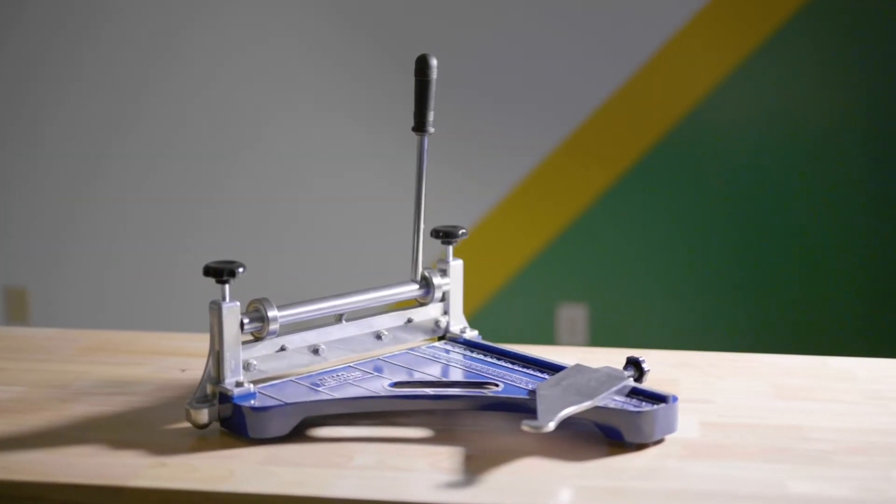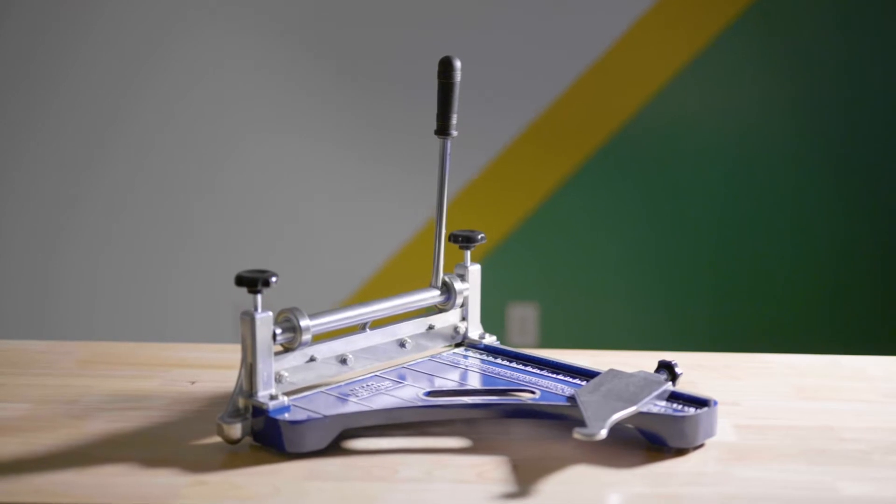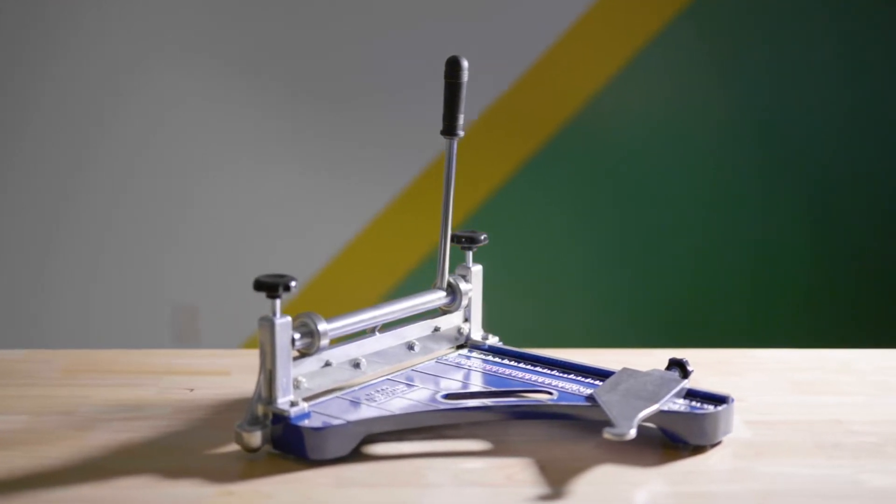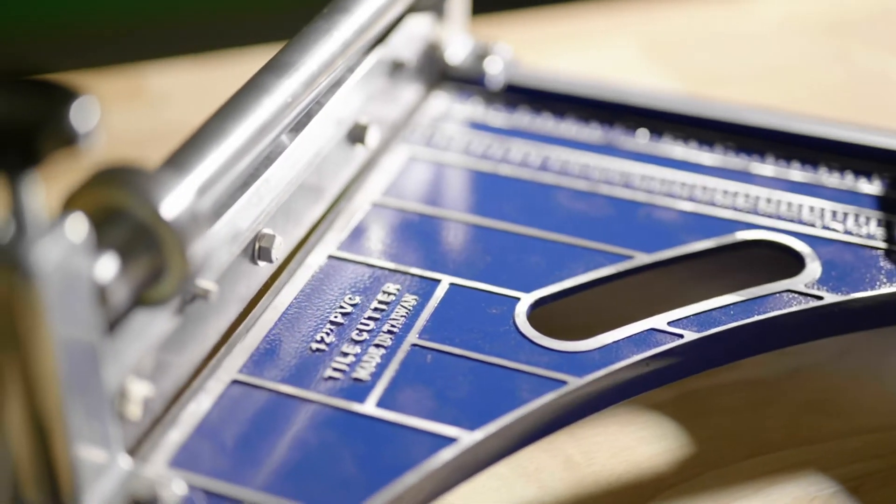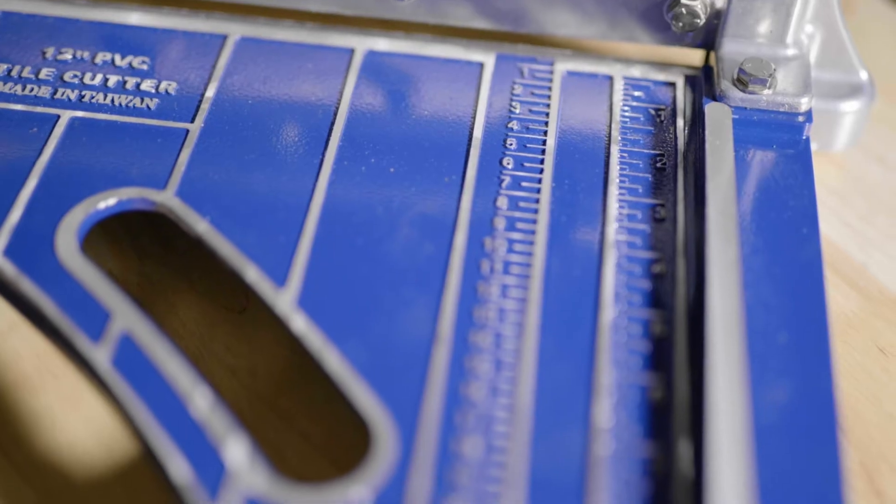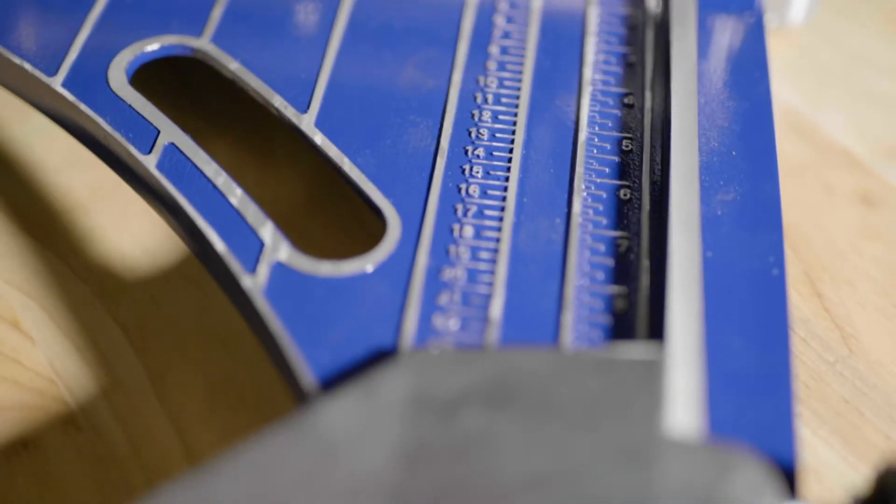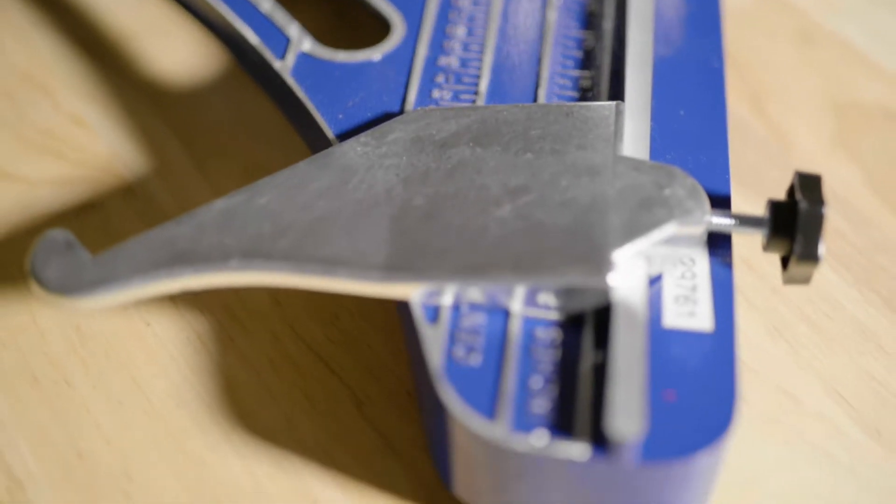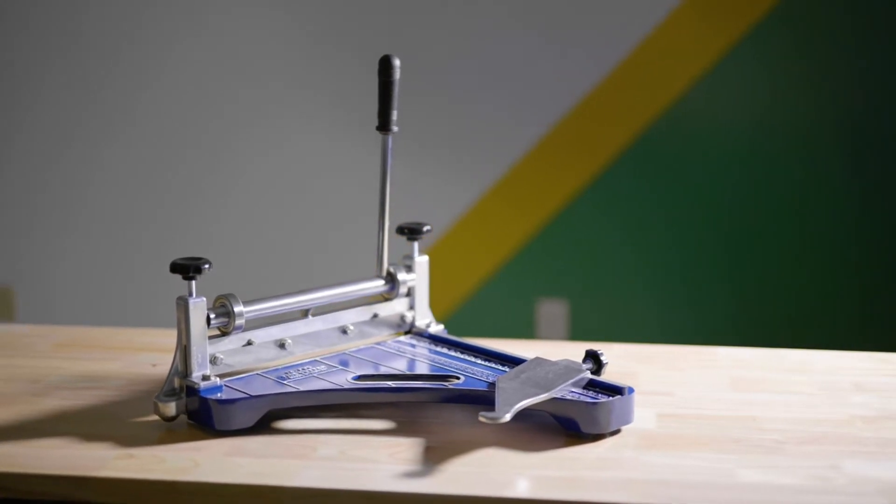In this video, we're going to go over the basic operational functions of our PVC Tile Cutter. This cutter is used on 1/8-inch thick solid vinyl, vinyl composition, and cork tiles. When used as demonstrated today, it will cut these materials cleanly and precisely.